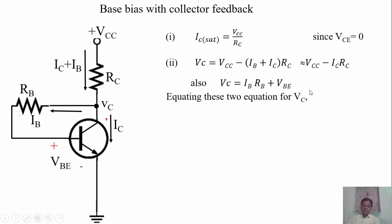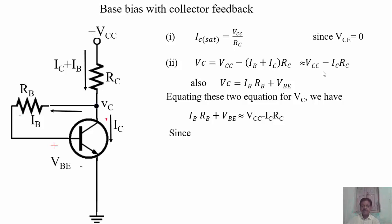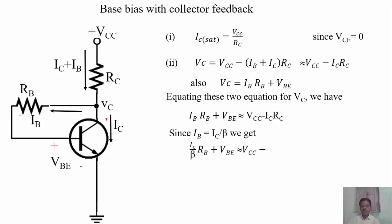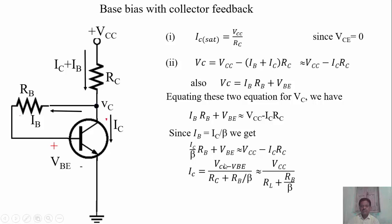Now let us equate these two equations for VC. Therefore: IB times RB plus VBE equals VCC minus IC times RC. We know that IB equals IC divided by beta. Substituting the value of IB, this equation becomes: (IC / beta) times RB plus VBE equals VCC minus IC times RC. Rearranging, IC equals VCC minus VBE, divided by RC plus RB divided by beta.